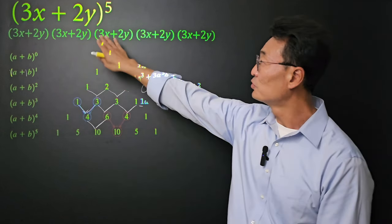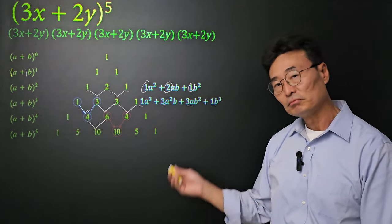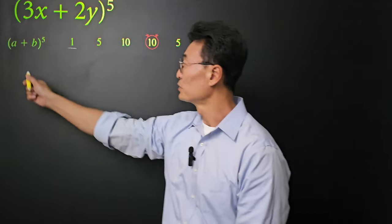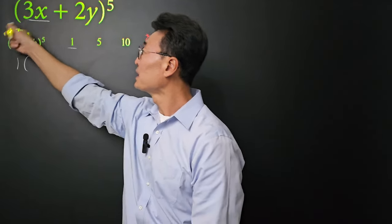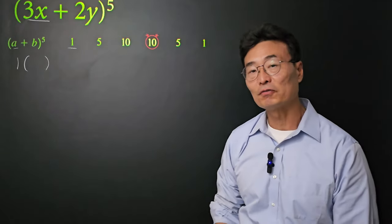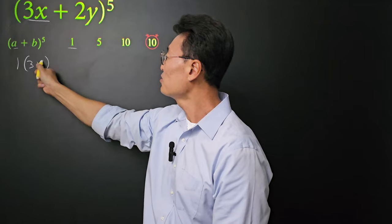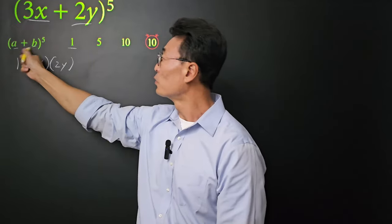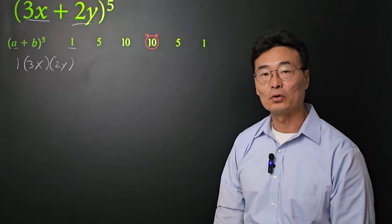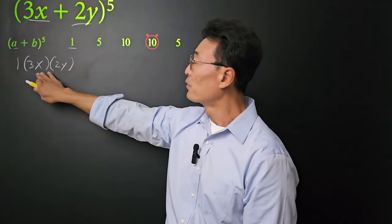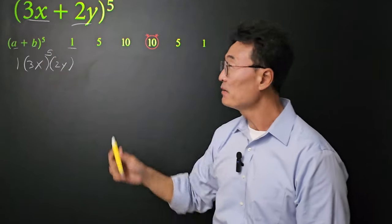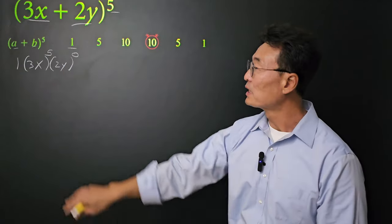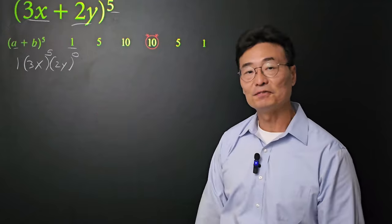To apply this to (3x + 2y) to the fifth power, we begin by writing 1 as the leading coefficient. In parentheses, I write down 3x — equivalent to a, the first term of the binomial — and also 2y, which replaces b. The 3x gets the power of 5, which is the exponent we start with, and 2y gets an exponent of 0, because these two exponents must add up to 5. That's the pattern.